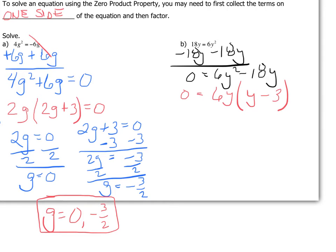So here's our factored form of that polynomial equation. So again with my zero product property, 6y equals 0 and y - 3 equals 0. And then I would solve.